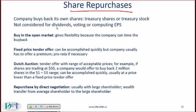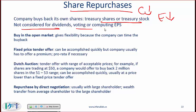Share repurchases: broadly speaking, there are two ways a company gives cash to shareholders — cash dividends and buying back shares from shareholders. This is also called a treasury stock operation. The company buys back its own shares, which are then called treasury shares or treasury stock. This reduces equity and also reduces cash if the company is using its own cash. Treasury shares are not considered for dividends, have no voting rights, and are not used in calculating EPS.